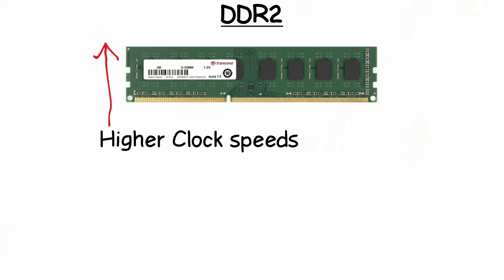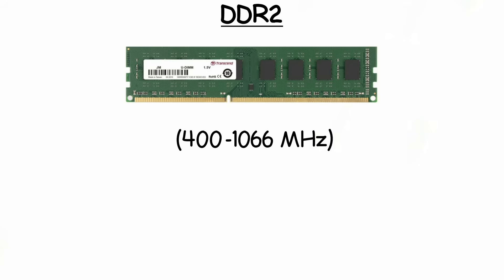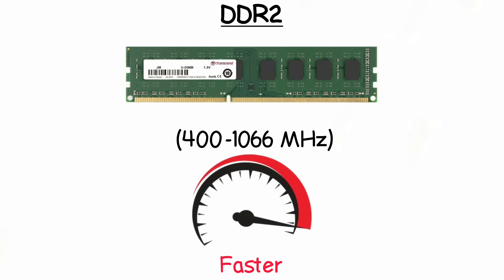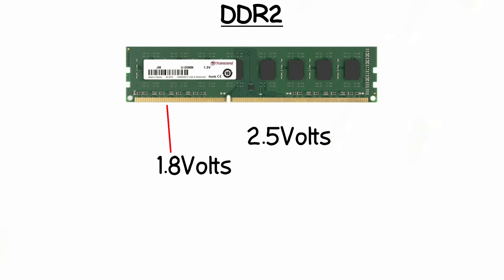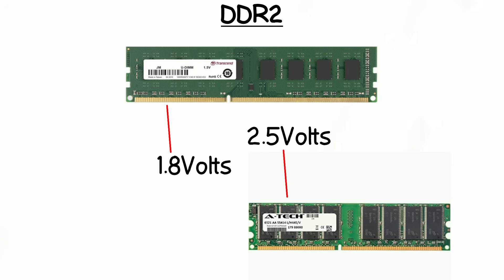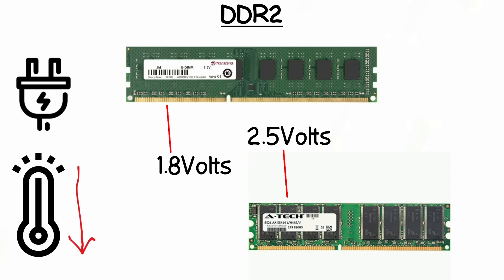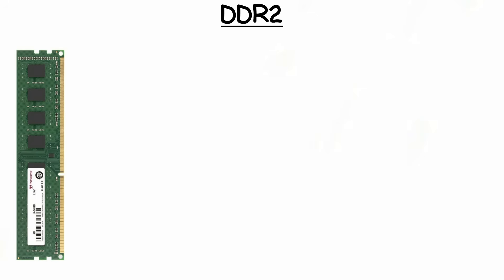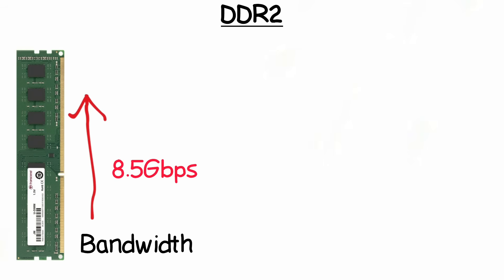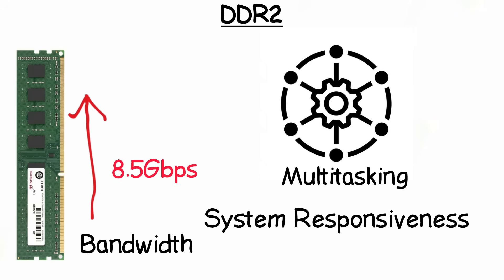DDR2 operated at higher clock speeds compared to DDR1, with data transfer rates typically ranging from 400 to 1066 megahertz, making it noticeably faster. It used 1.8 volts instead of the 2.5 volts used by DDR1, which means it consumed less power and produced less heat. DDR2 doubled the internal bus speed, allowing more data to be moved per clock cycle, resulting in higher memory bandwidth averaging 8.5 gigabits per second and improving multitasking and system responsiveness.